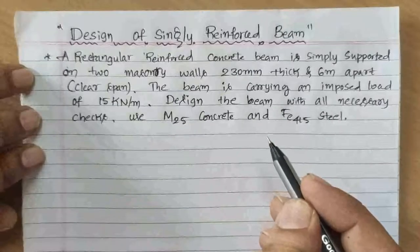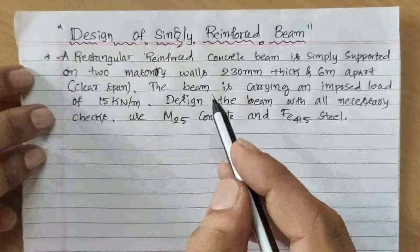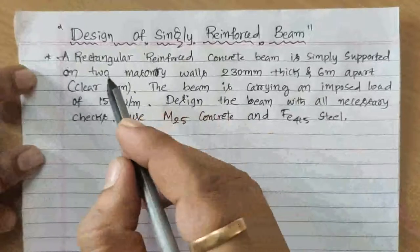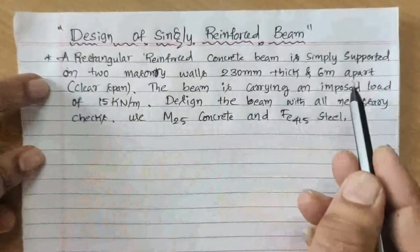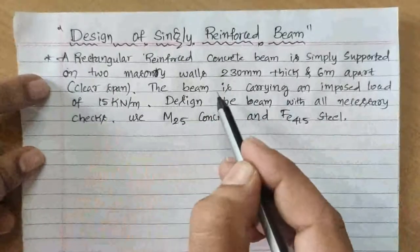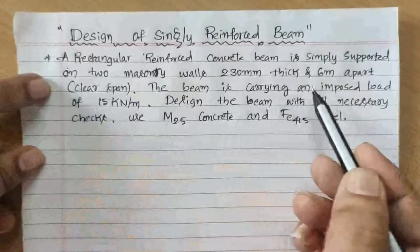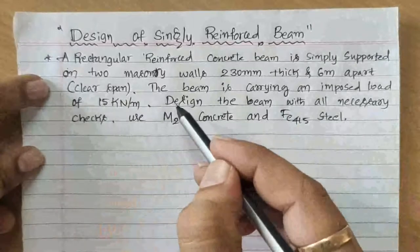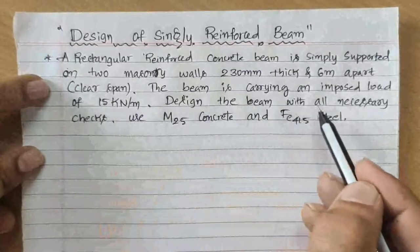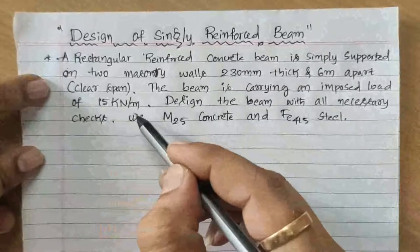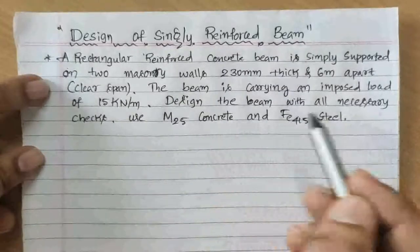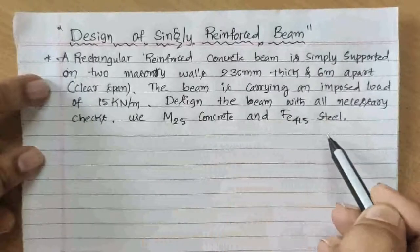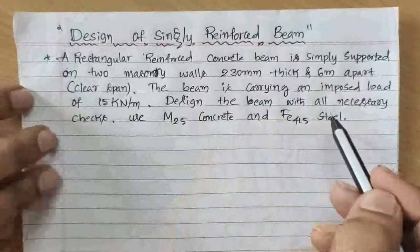Hello everyone. Today we are going to discuss about the design of a singly reinforced beam. Here we are having one problem: a rectangular reinforced concrete beam is simply supported on two walls 230 mm thick and 6 meters apart (clear span). The beam carries an imposed load of 15 kN/m. Design the beam with all necessary checks using M25 concrete and Fe415 steel.